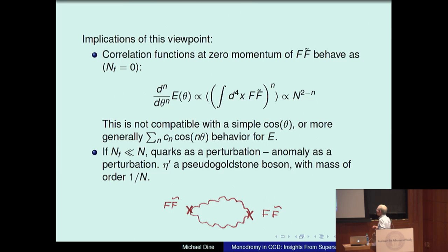If N_F is much less than N, you can think of quarks as a perturbation, and in particular the anomaly is a perturbation. What Witten stressed is that in this case, the eta prime could truly be thought of as a pseudo-Goldstone boson with mass squared of order 1 over N.